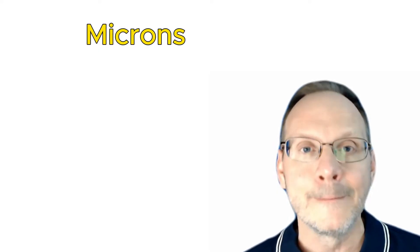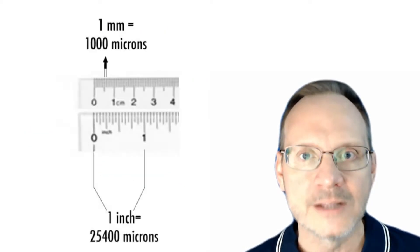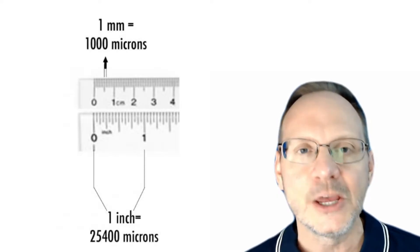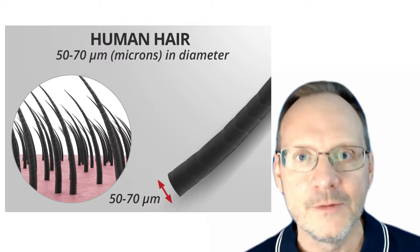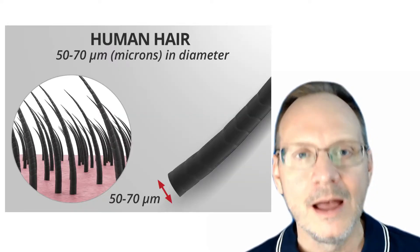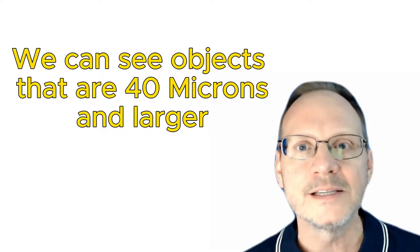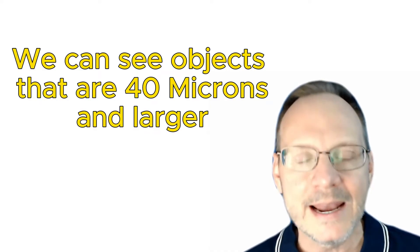Air particles are oftentimes measured in size by microns. A micron is short for a micrometer and it is one millionth of a meter. There are 1,000 microns in a millimeter and there are 25,400 microns in an inch. A human hair on average is about 70 microns in thickness or diameter, give or take 30 microns depending on the thickness of the hair. The smallest objects visible to the naked human eye are 40 to 50 microns in size, so if an object is smaller than 40 microns we cannot see it with just our eyes.